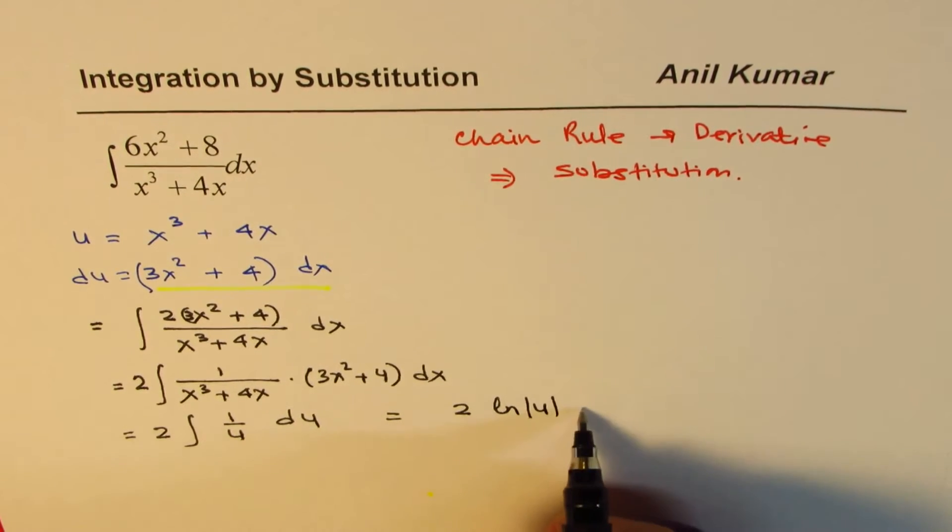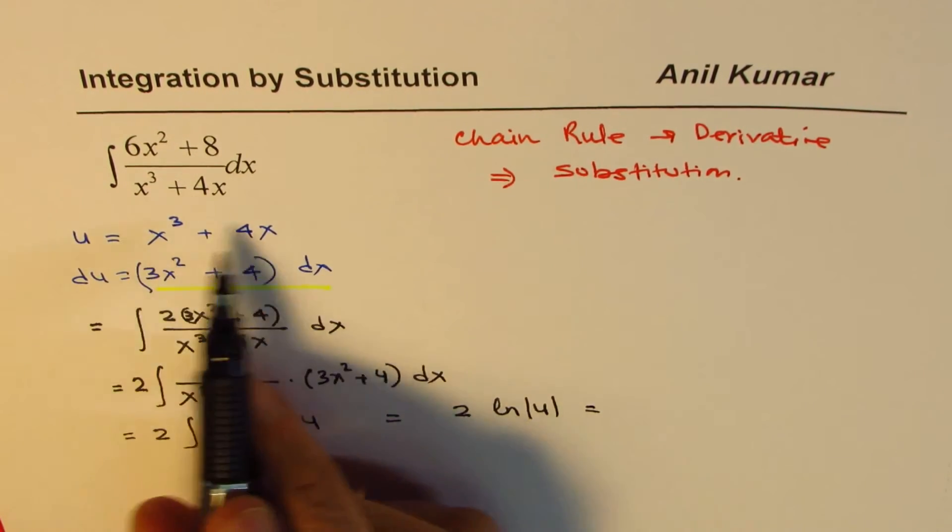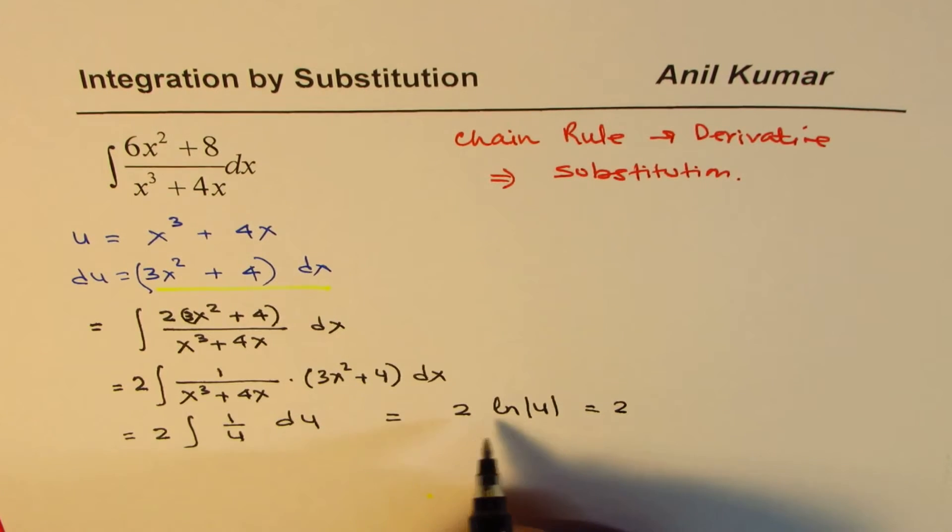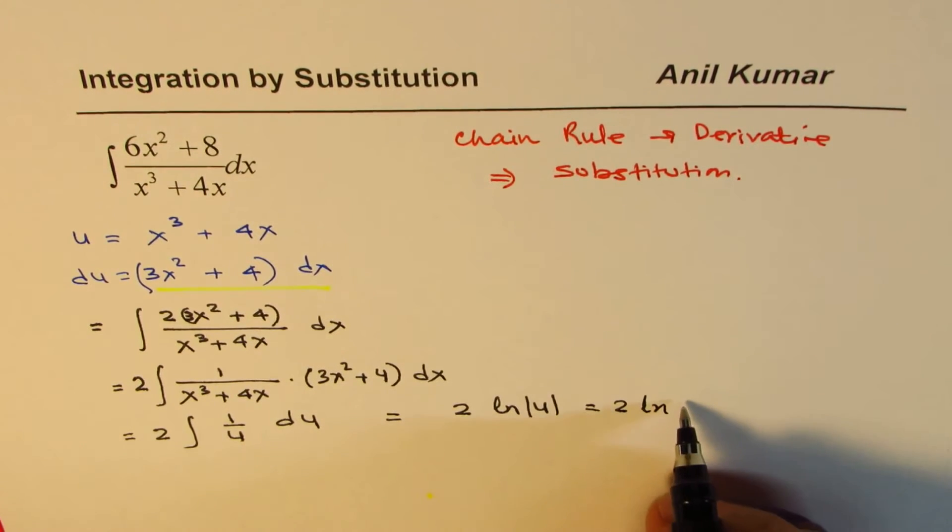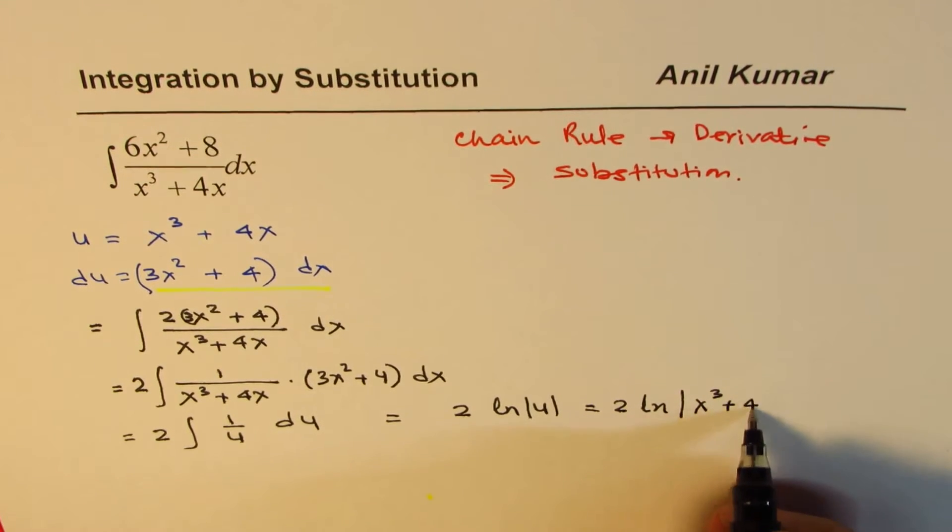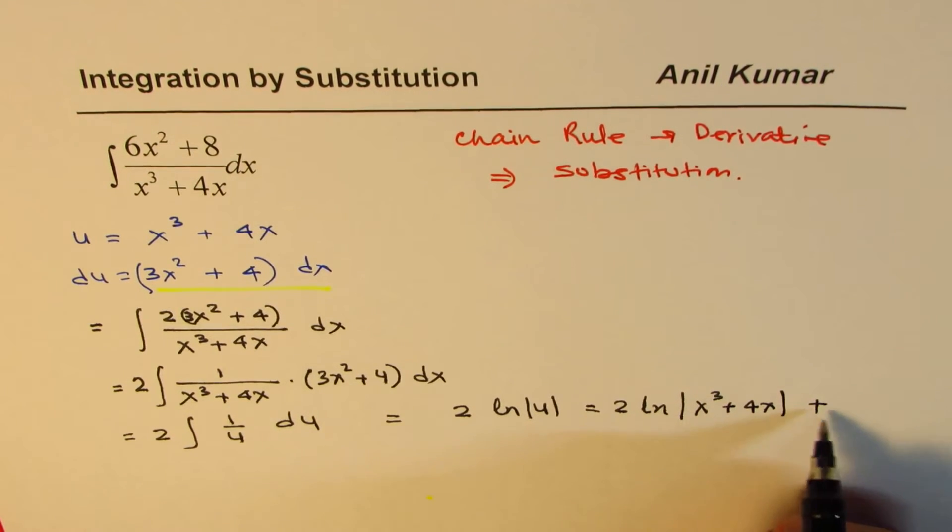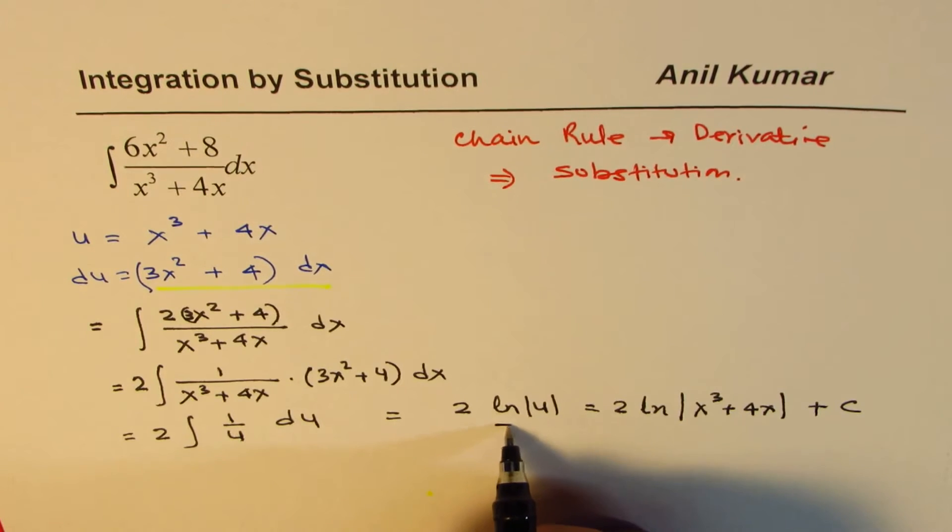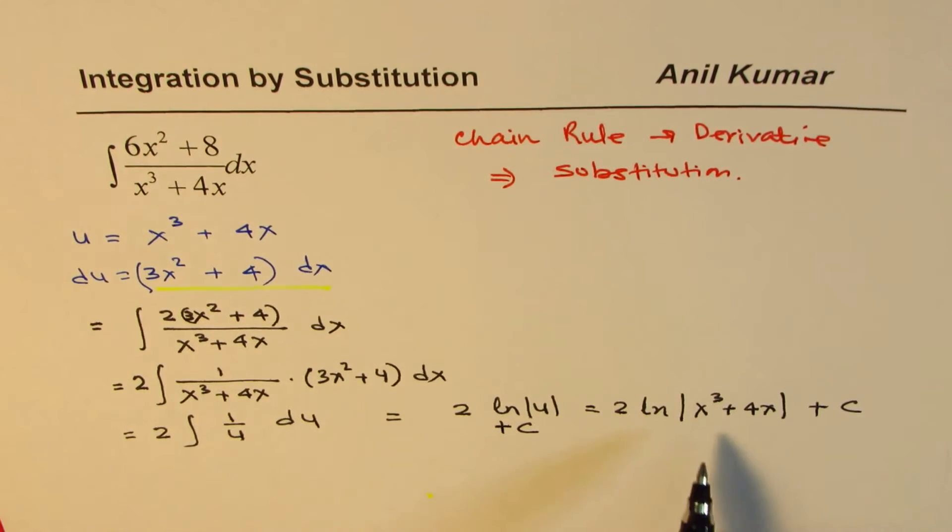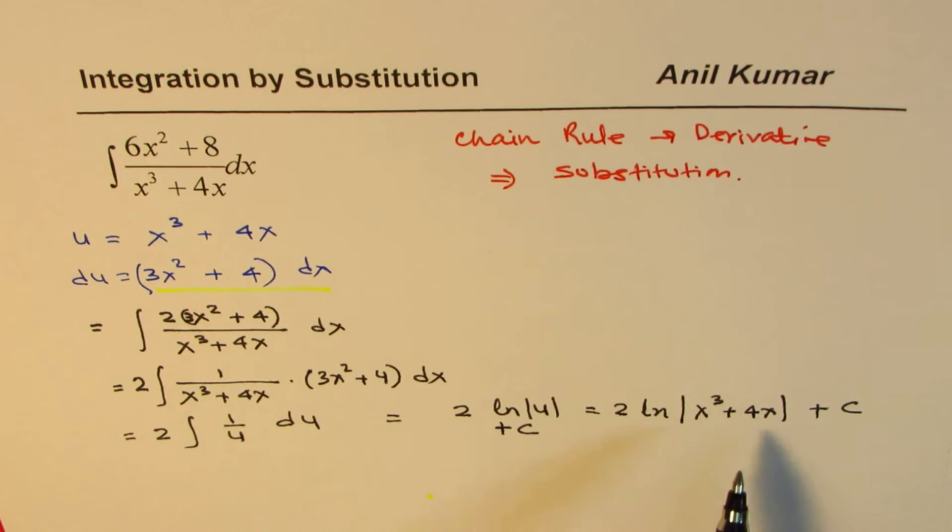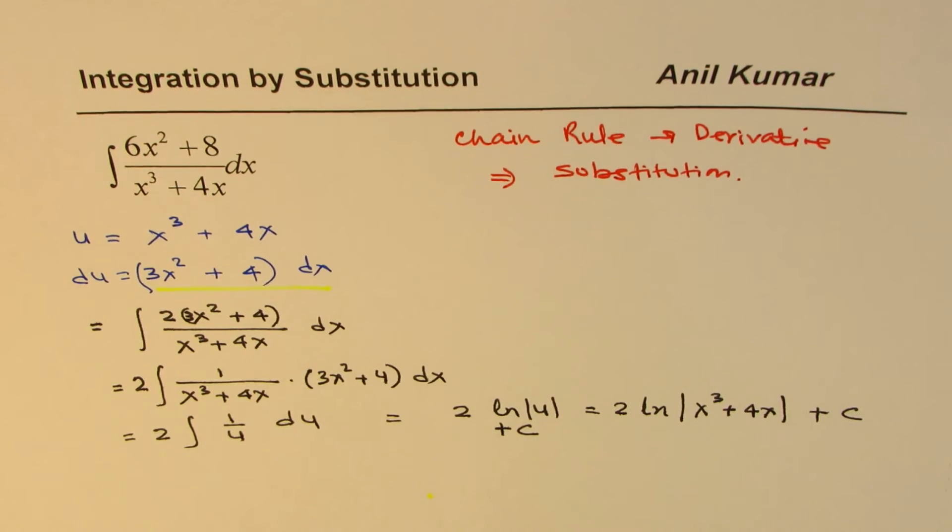Now substitute back what u is. So we get 2 ln absolute value of x cubed plus 4x plus c. So that becomes the general solution for the given integration question.